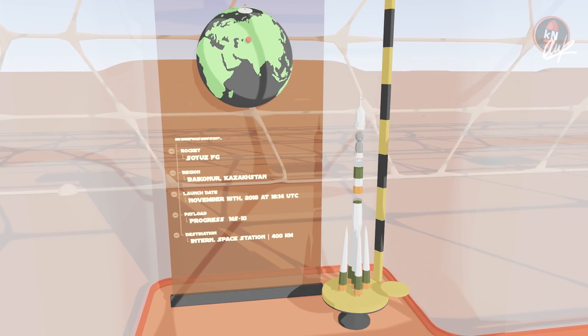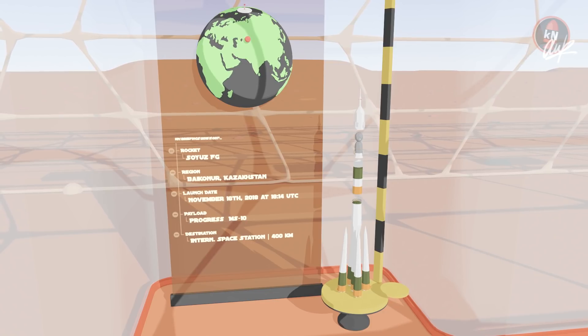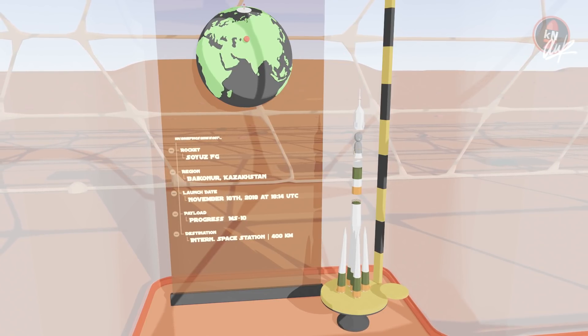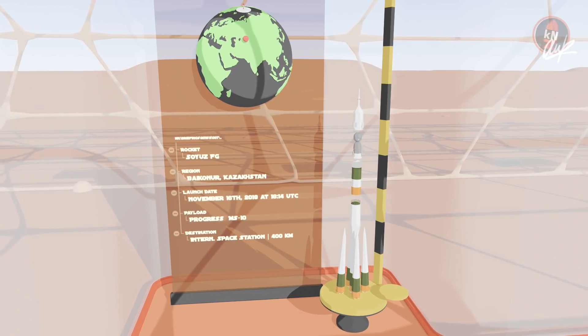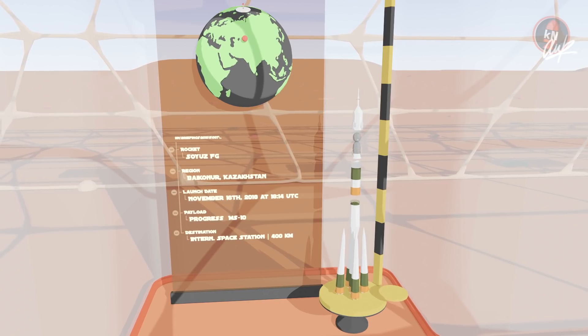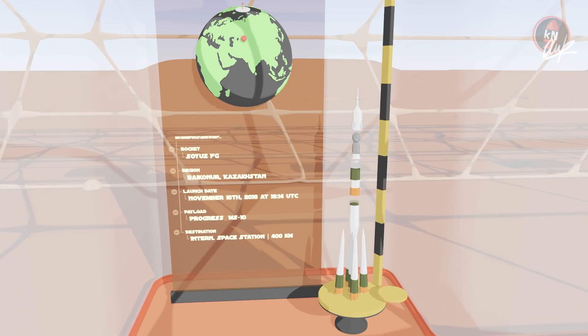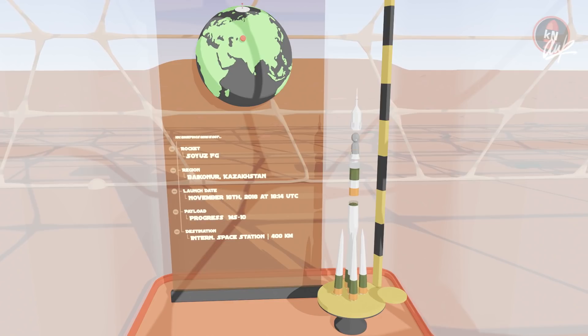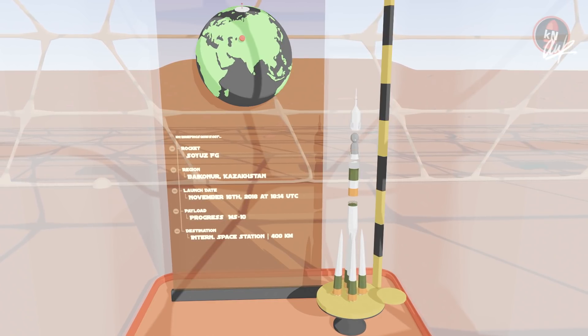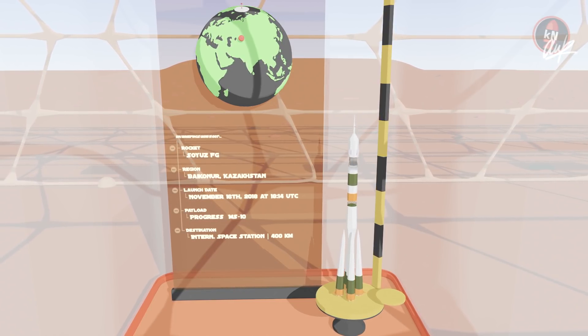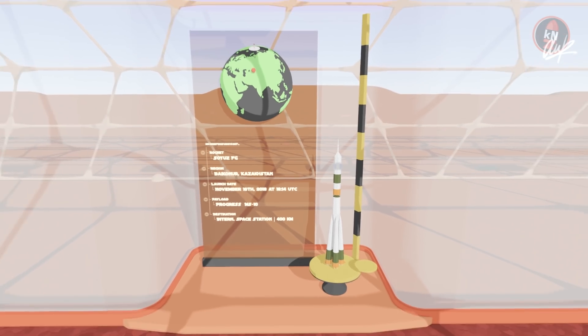Cargo wise it was a pretty standard resupply mission including 750 kg of propellant for the ISS which it needs to stay in orbit. Half a ton fresh water which is always nice to have even though they keep reusing a lot of it on the station. And of course a big breeze of fresh air as they can't open a window up there.